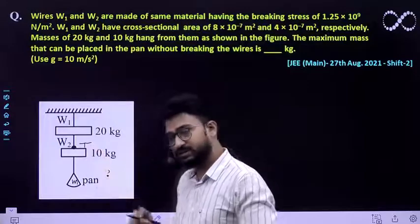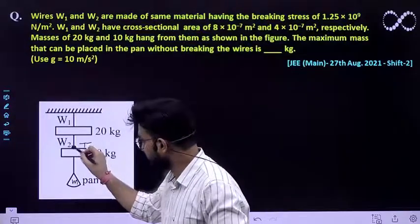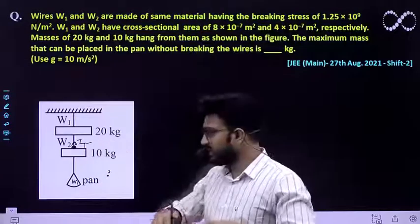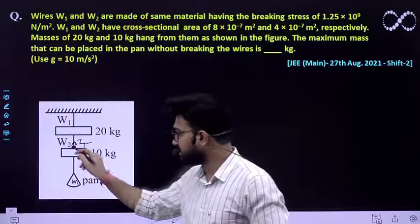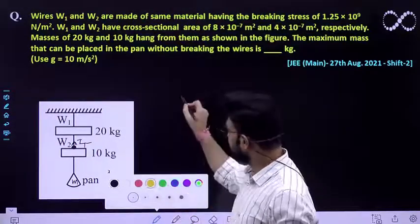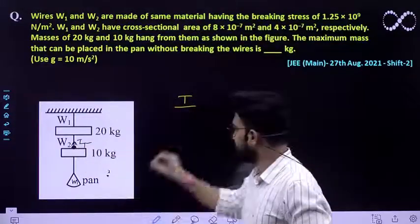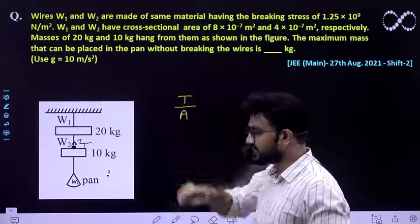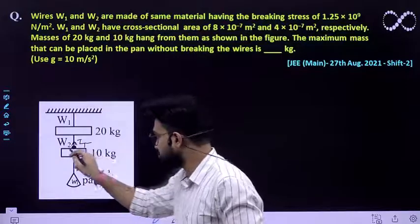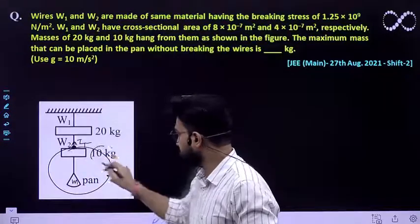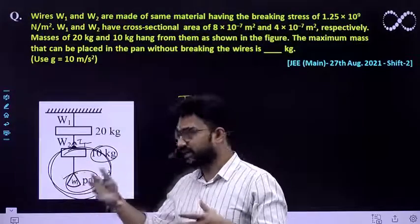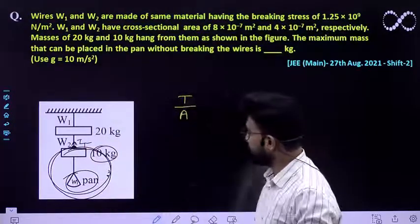Once this mass has been put, the tension in the wire is T. This tension per unit area in the cross sectional wire at this particular point will be the breaking strength of this wire. What would be the tension? Tension in the wire would be because of the two masses: 10 kg plus m kg mass.